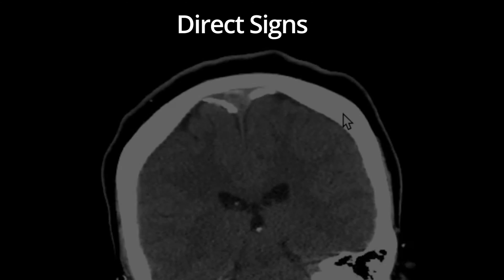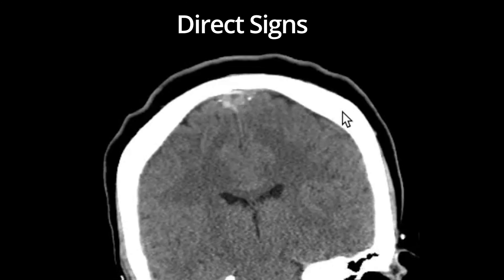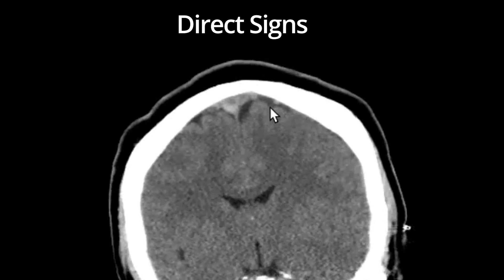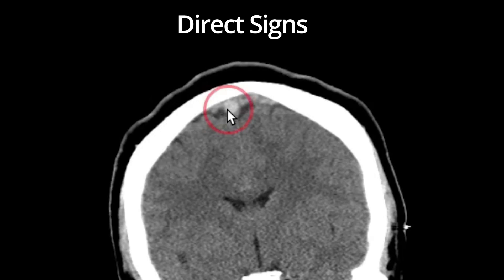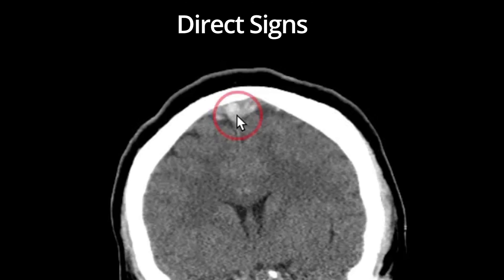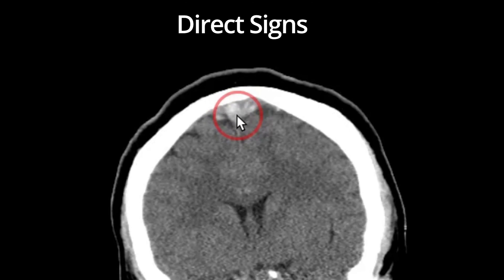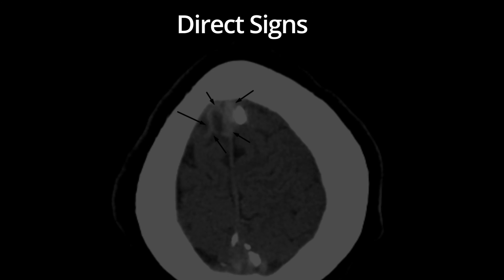Here is an example of clot within the superior sagittal sinus. Notice as I scroll through that the sinus becomes focally hyperdense and expanded — this is thrombus. On the axial, this finding was more difficult to appreciate and only apparent on a few slices. Here, the black arrows demonstrate a thrombosed superior sagittal sinus and thrombosed draining cortical vein.